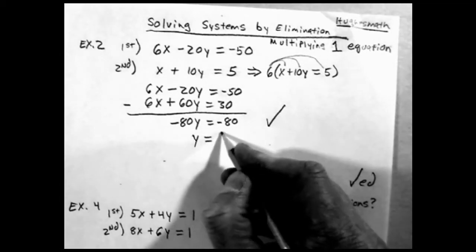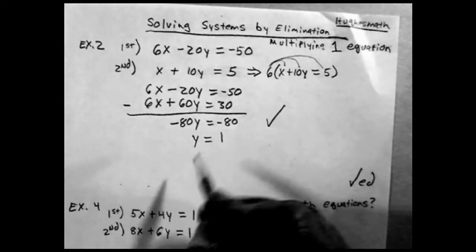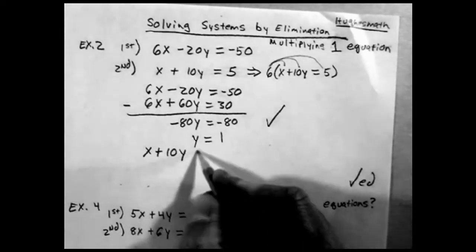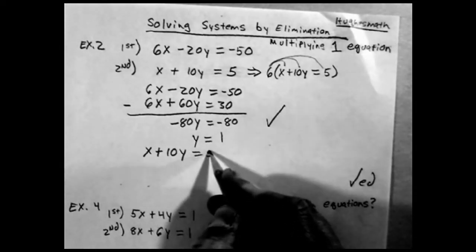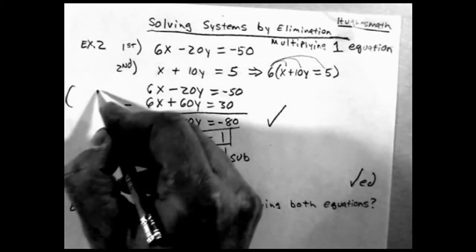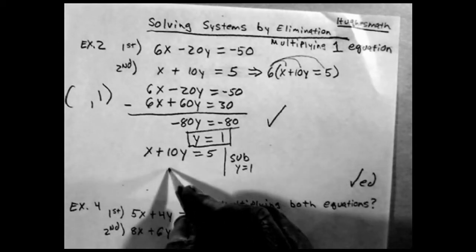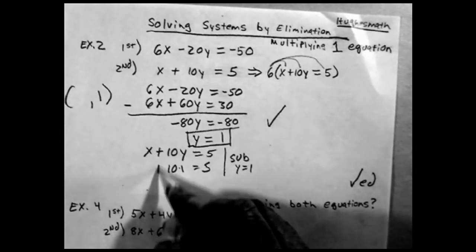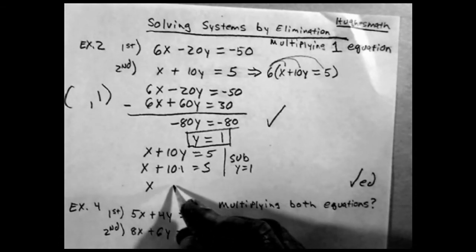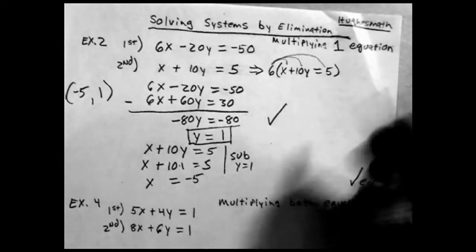So I figure out that y equals—dividing both sides by negative 80—I get y equals 1. Now I'm going to find out what x would be if y equals 1. So x plus—I'm going to take the second equation because it has x by itself—equals 5. I'm going to sub in y equals 1.